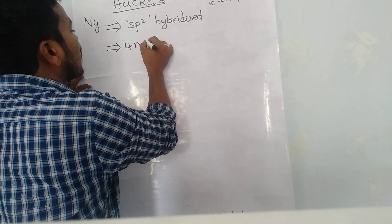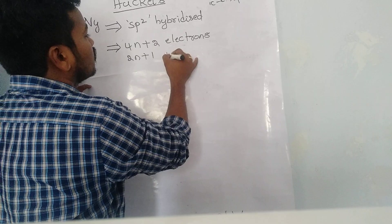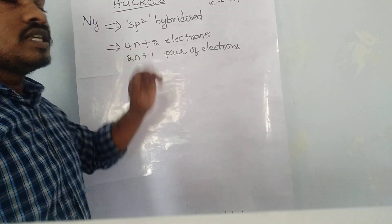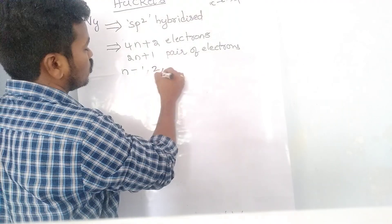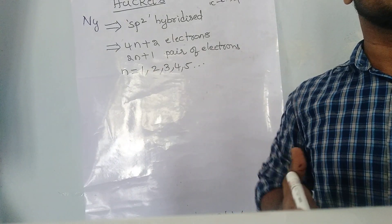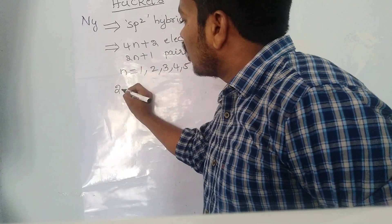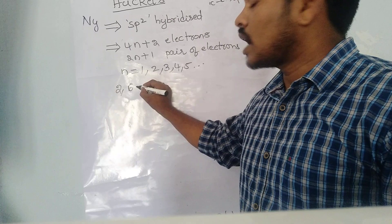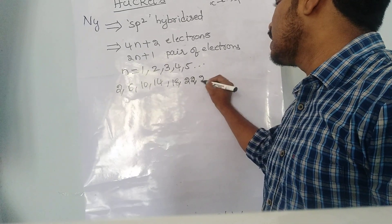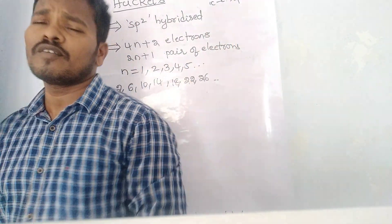The second rule is that the compound should contain 4n+2 pi electrons, or equivalently 2n+1 pairs of pi electrons. Here, n is the number of rings present in the system — n can be 1, 2, 3, 4, 5, 6, and so on. This gives us certain numbers of electrons: 2, 6, 10, 14, 18, 22, 26 electrons. These numbers are called the magic numbers for aromatic compounds according to Huckel's Rule.